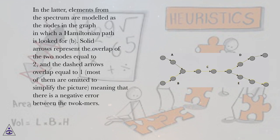In the latter, elements from the spectrum are modeled as nodes in the graph in which a Hamiltonian path is looked for. Solid arrows represent the overlap of the two nodes equal to 2, and the dashed arrows overlap equal to 1. Most of them are omitted to simplify the picture, meaning that there is a negative error between the two k-mers.